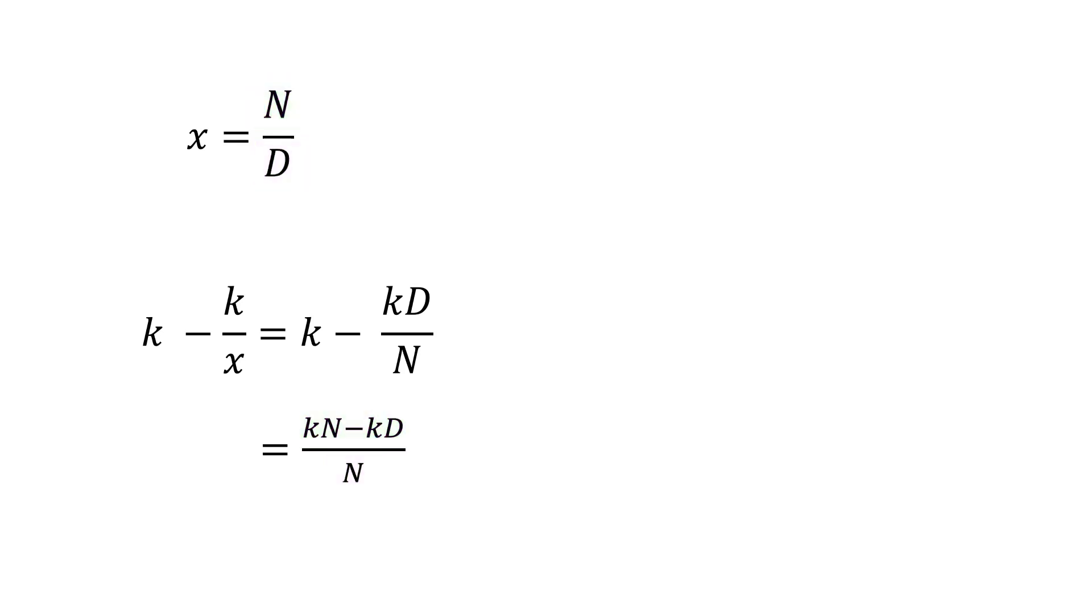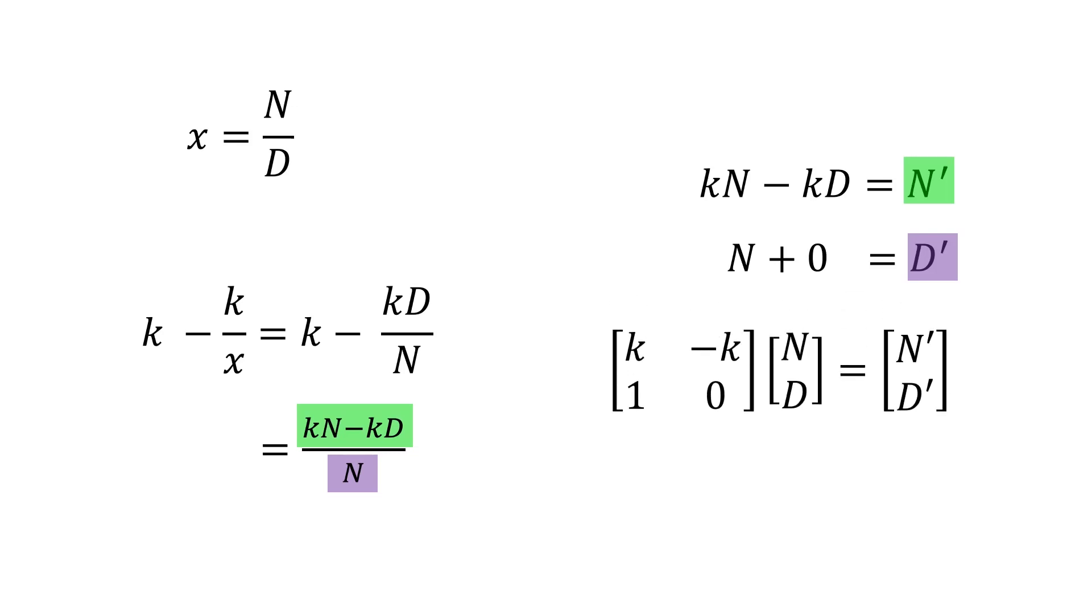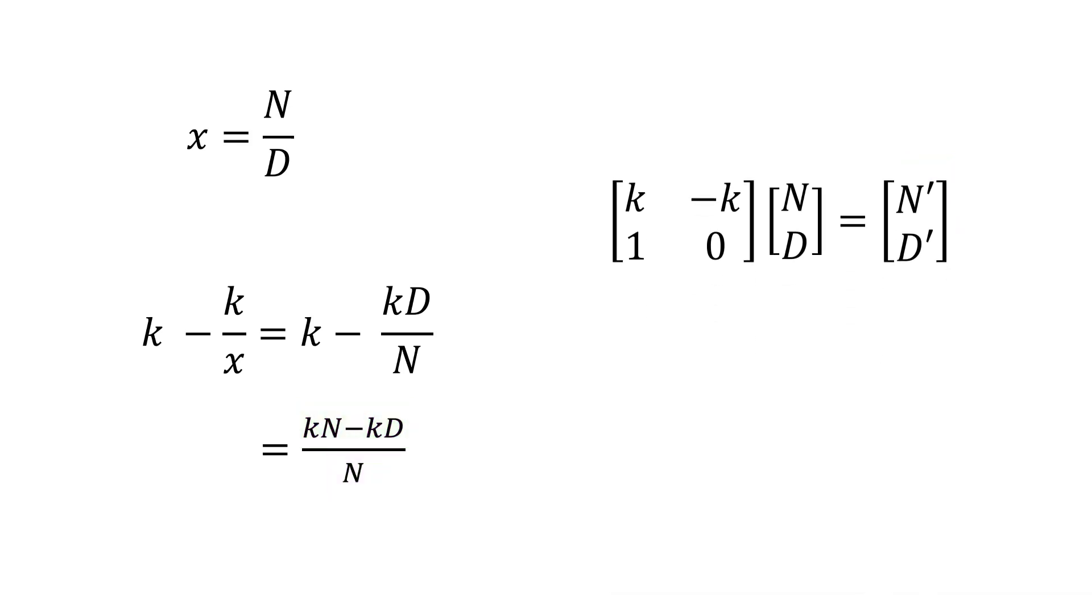We can write this as a system of linear equations in n and d, so applying k minus k over x is equivalent to doing this to the numerator and denominator. Using matrix notation, it looks like this. We have a linear transformation on our hands.